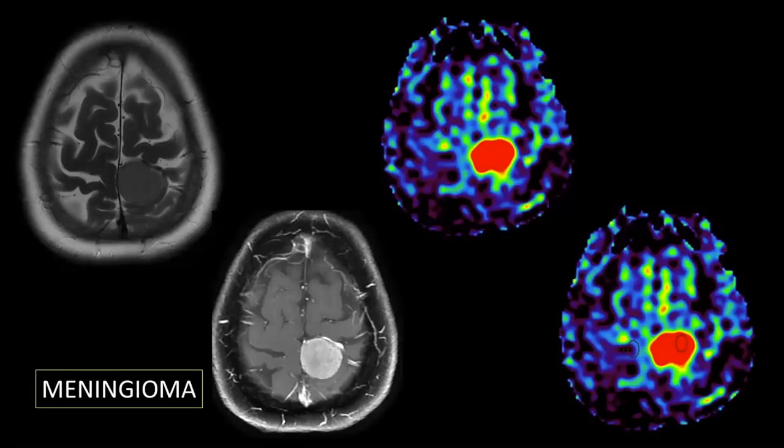Not only for intraaxial lesions, ASL can also depict hyperperfusion in something like meningioma. So even without giving contrast, you can confidently diagnose meningioma with this kind of ASL picture.